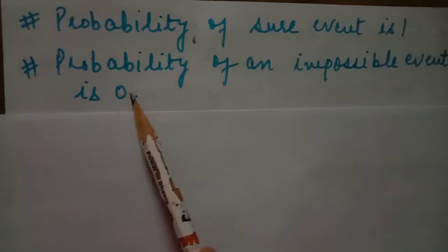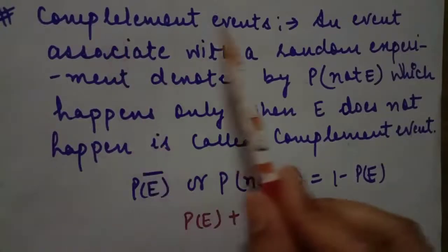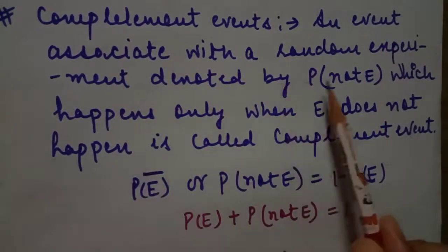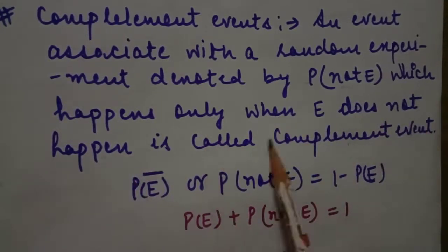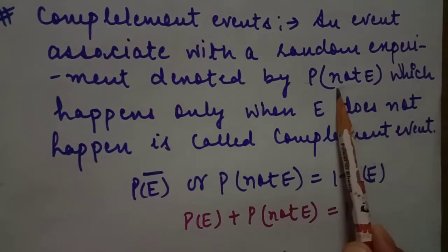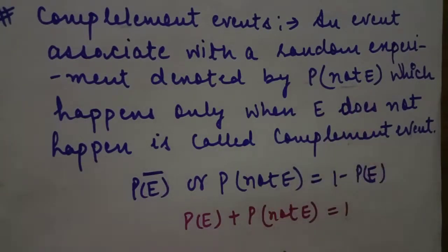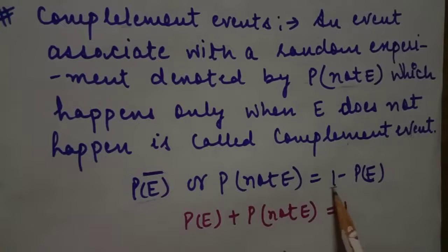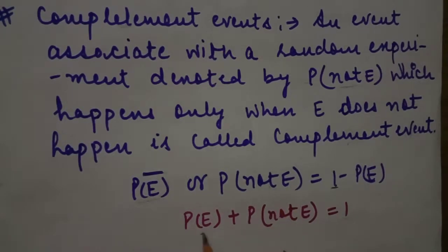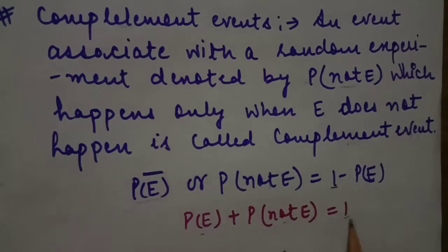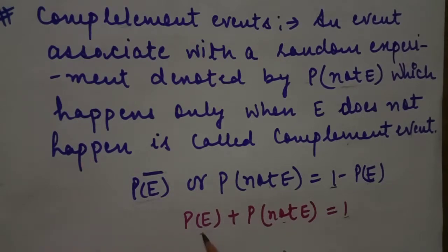The complement of an event, denoted P(not E), happens only when E does not happen. We can write it as P(not E) = 1 − P(E), because the whole work equals 1, and the part happening plus the part not happening always sums to 1. This is the empirical formula — useful, for example, when you know the winning probability and need to find the losing probability.